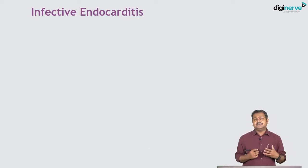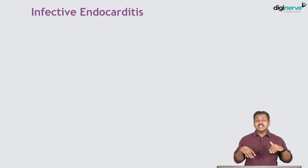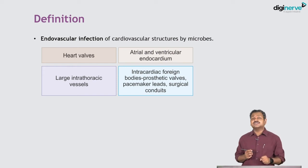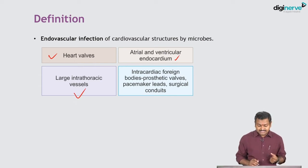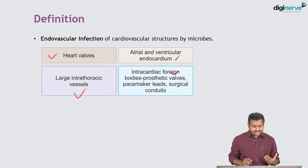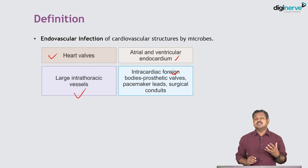Infective endocarditis is the infection of the endocardium, the valves, or the inside of the heart. If prosthetic devices or vascular intracardiac structures get infected, they also constitute infective endocarditis. By definition, infective endocarditis is an endovascular infection of cardiovascular structures by microbes — including heart valves, atrial or ventricular endocardium, large intrathoracic vessels, pacemakers, surgical conduits, or prosthetic valves.